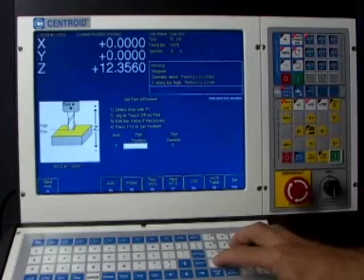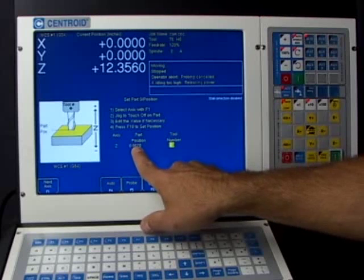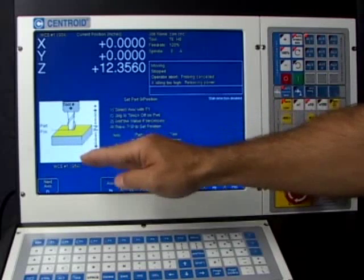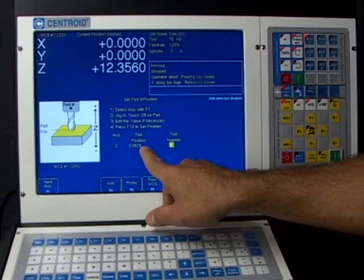So I'm going to type in two thousandths for the part position. In other words, the tool is not really touching the top of the workpiece. It's touching a piece of paper which is two thousandths above it. So I'm typing in two thousandths. That's the position that we're touching.